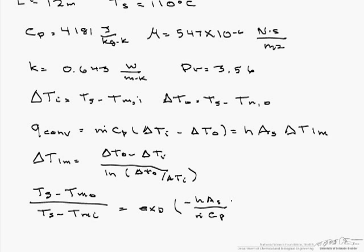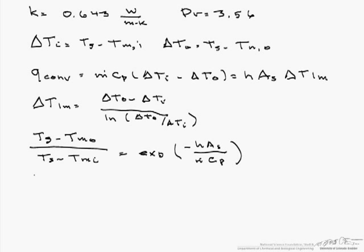And so now, if we want to solve for our Tmo, it is just Ts minus (Ts minus Tmi) times the exponential of (minus H As / M Cp).